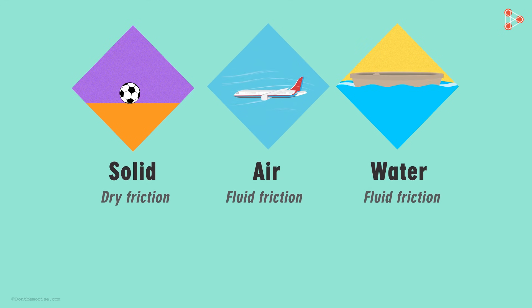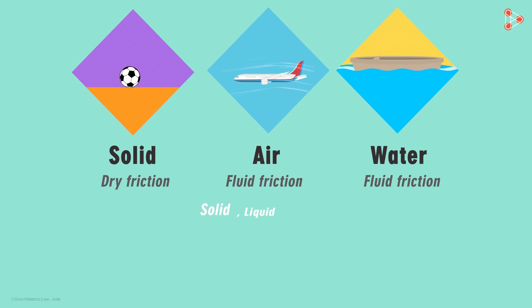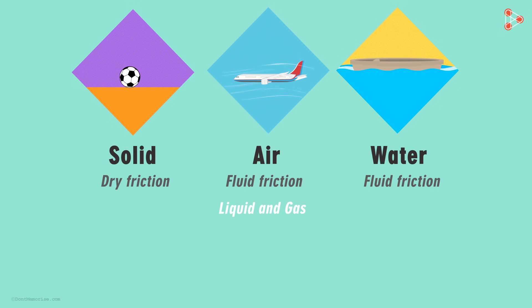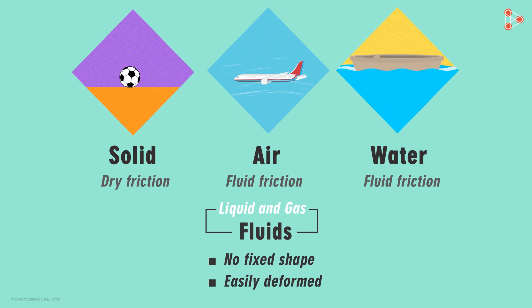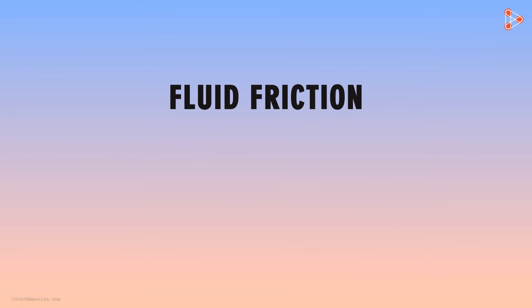The major states of matter are solid, liquid, and gas. Liquids and gases are generally referred to as fluids. Why are liquids and gases considered to be fluids? One common characteristic of fluids is that they have no fixed shape and can be easily deformed. Let's discuss a bit more about fluid friction in this lesson.